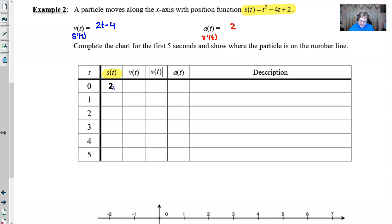So if I let t be 0 in the s(t), it looks pretty clear that I'm going to get a position of 2. If t is 1, I've got 1 minus 4 plus 2, which is negative 1. And if t is 2, it looks like I've got 4 minus 8 plus 2, which is negative 2.